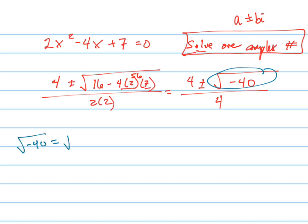Well, first of all, that's the same as the square root of negative 1 times the square root of 40. And the square root of negative 1 is just i. So it's i times the square root of 40.